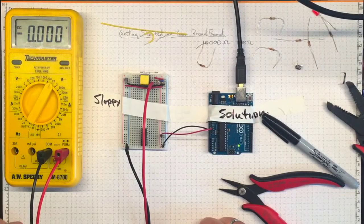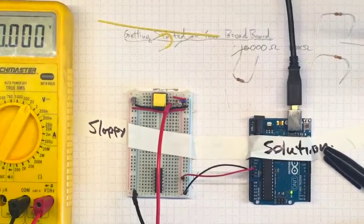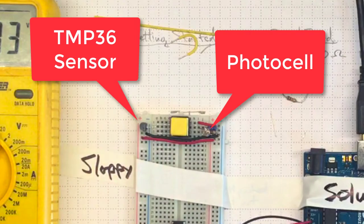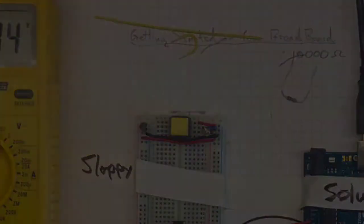In the next couple of clips we're going to add a photo cell to measure light and a TMP-36 temperature sensor to measure the room temperature, so that then we'll be ready to make some measurements and find out how this Arduino stuff works.